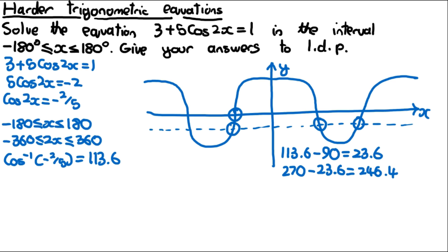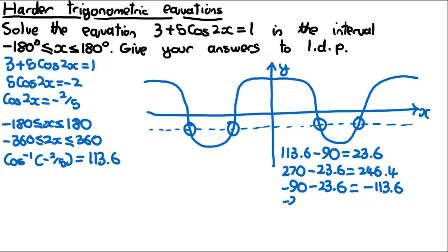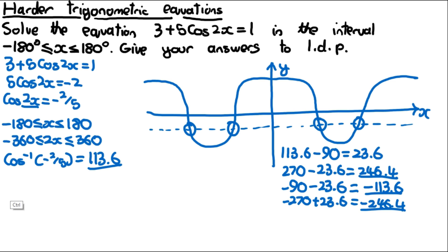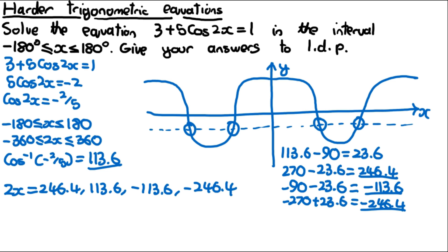For the negative side: the point near -90 is -90 minus 23.6 = -113.6. Be careful with the sign — it's going in the negative direction. The point near -270 is -270 plus 23.6 = -246.4. These are the solutions; underline them to avoid confusing solutions with distances. So 2x equals 246.4, 113.6, -113.6, and -246.4.